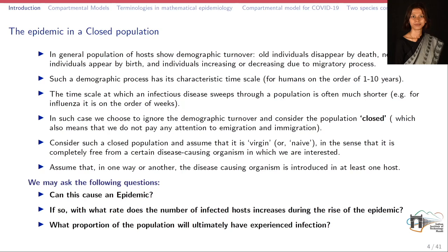The questions that may come to our mind are: first, can this cause an epidemic? When one disease-causing organism has been introduced in that particular closed population, can this break into an epidemic, or will it just remain as any ordinary disease? Second, if it can break into an epidemic, then at what rate does the number of infected hosts increase during the rise of the epidemic? The third question is: what proportion of the population will ultimately have experienced infection?